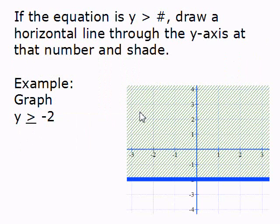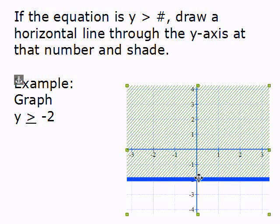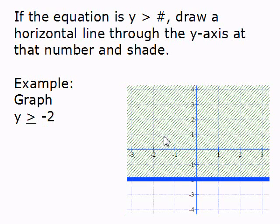If the equation is y is greater than some number or y is less than some number, you're going to draw a horizontal line through the y-axis at that number and then shade. In this example, we've got a horizontal line drawn through the y-axis at negative 2. It says graph y is greater than or equal to negative 2. Since it says y is greater than, we shaded above the line — that's the green shading on the graph. And since it's or equal to, we know that our line is solid.